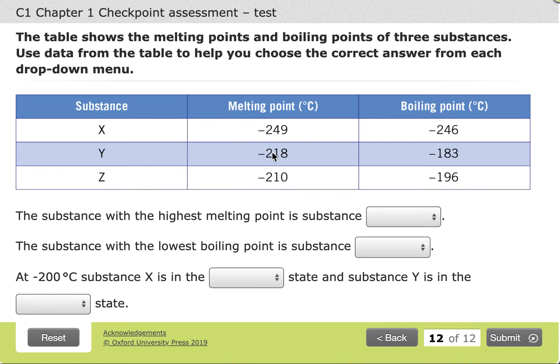So we look at the melting points. Minus 249 is the lowest melting point because it's furthest away from zero. Minus 218, minus 210. So our substance Z has the highest melting point because its melting point is closest to zero.